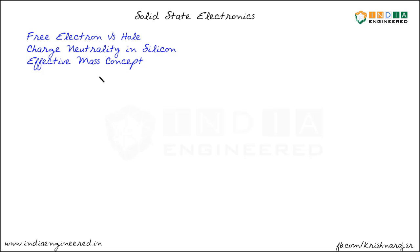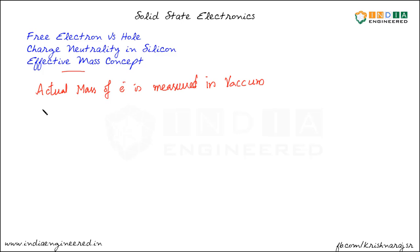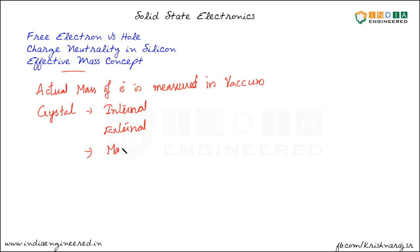Now we will see the concept of effective mass. We won't be discussing it in detail at this point — just mentioning it so that in coming discussions it will be easier to follow along. The actual mass of an electron is measured in vacuum. But in an actual silicon crystal or any semiconductor material, electrons experience multiple forces — both internal and external — so their behavior should show some difference from the actual mass of the electron due to these forces. It also varies with the material.